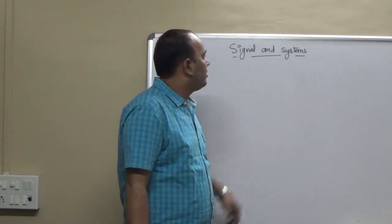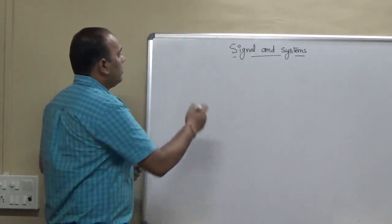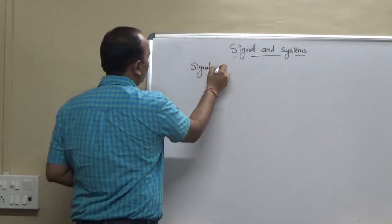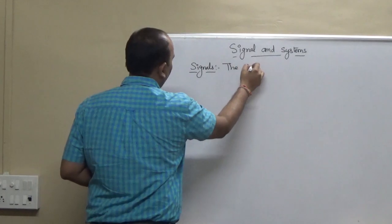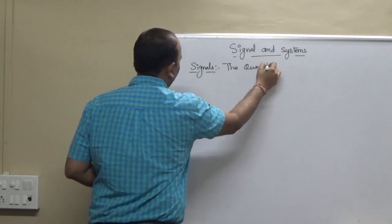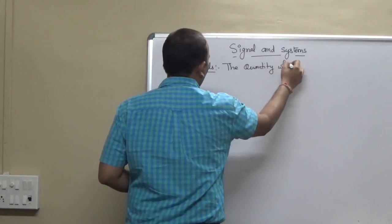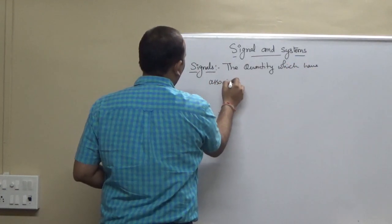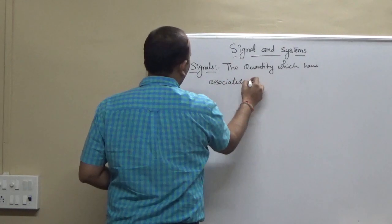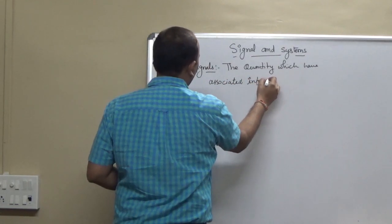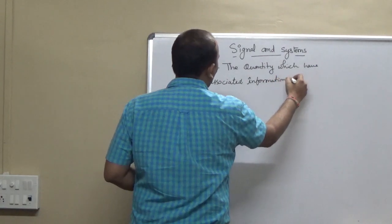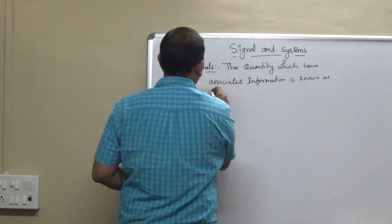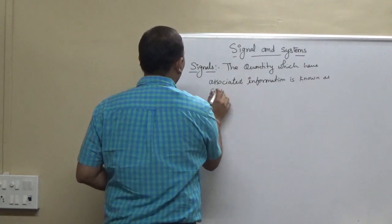This is the signal and systems course. The first thing is signals. A quantity which has associated information is known as signals.